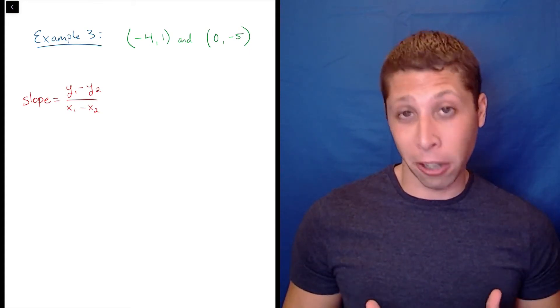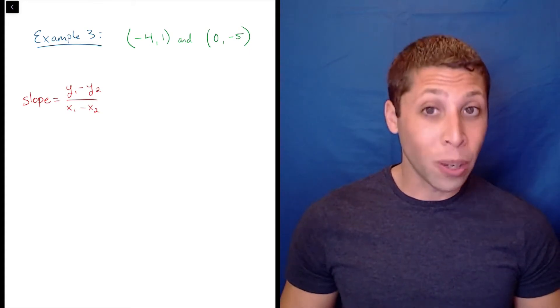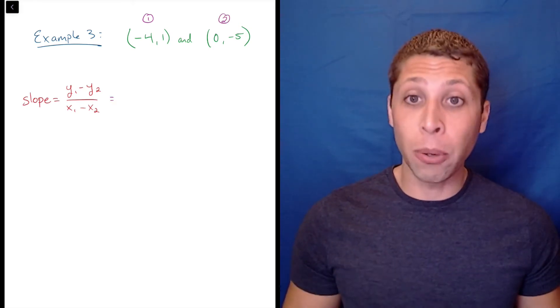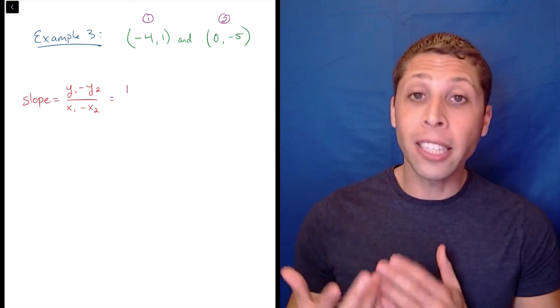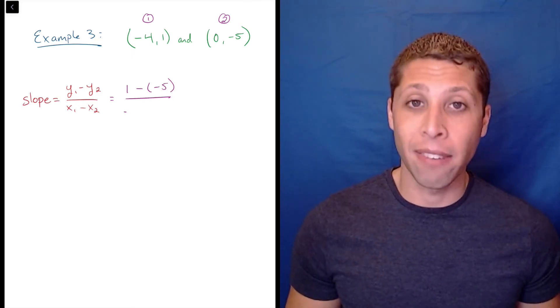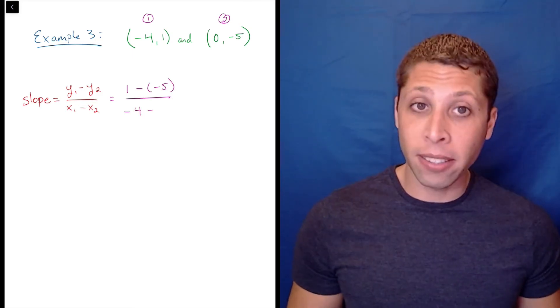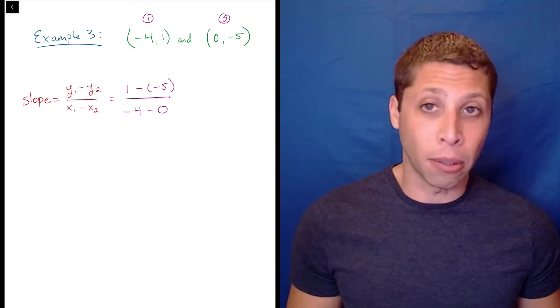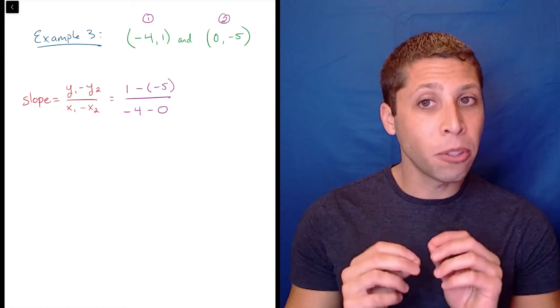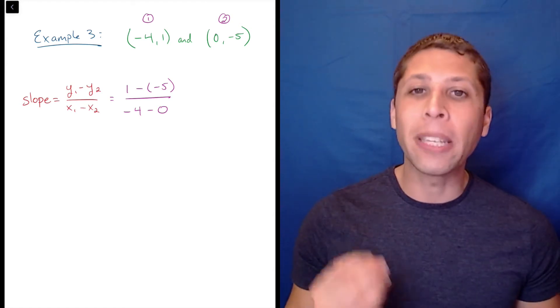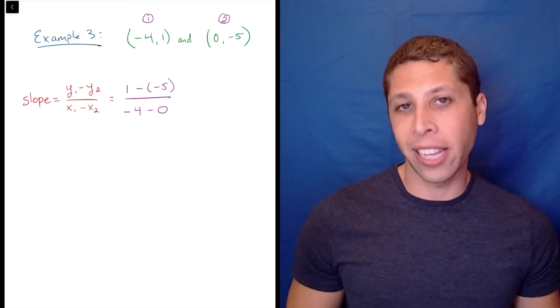But sometimes, negatives are unavoidable. Let's look at a trickier example. Again, for the sake of simplicity, I'll make the first point the first point, plugging in the coordinates. y1 is 1 and y2 is negative 5. On the bottom, I need to be consistent. The x1 is negative 4 and the x2 is 0. Notice that when I substituted in the negative numbers, I used parentheses. I always do this because I'm always afraid of losing a negative.